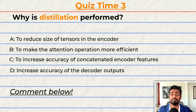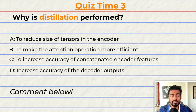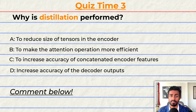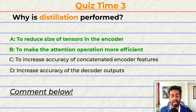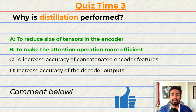Quiz time! Why is distillation performed? A) To reduce the size of the tensors in the encoder. B) To make the attention operation more efficient. C) To increase the accuracy of the concatenated encoder features. Or D) To increase the accuracy of the decoder outputs. Note that multiple options may be correct. The correct answers are A and B. But can you tell me why? Comment your reasoning below. If you think I deserve it, please give this video a like — it will help me out a lot.